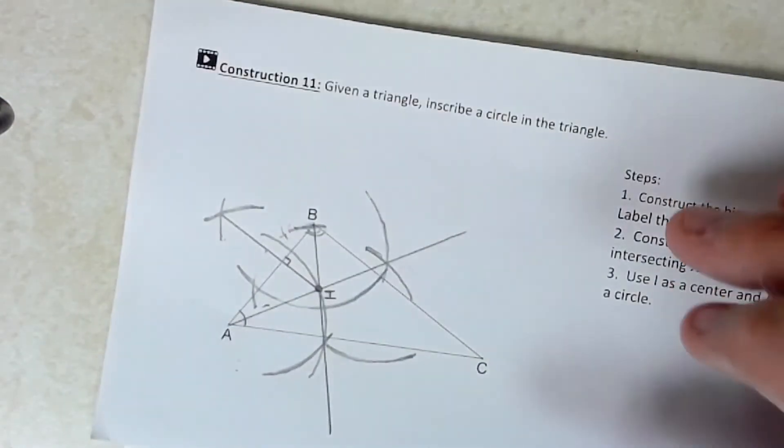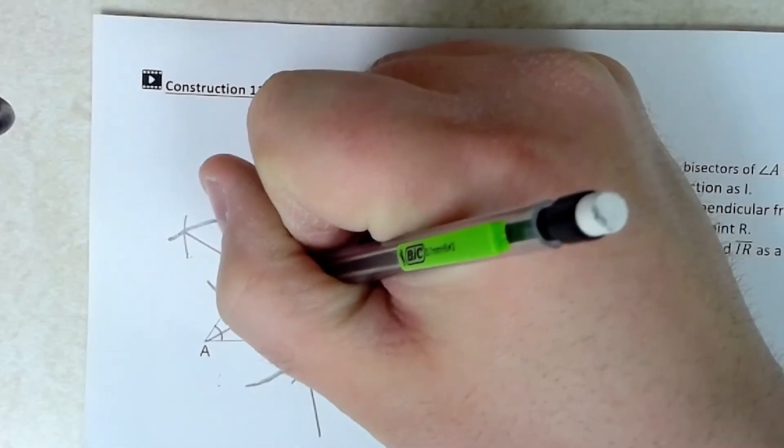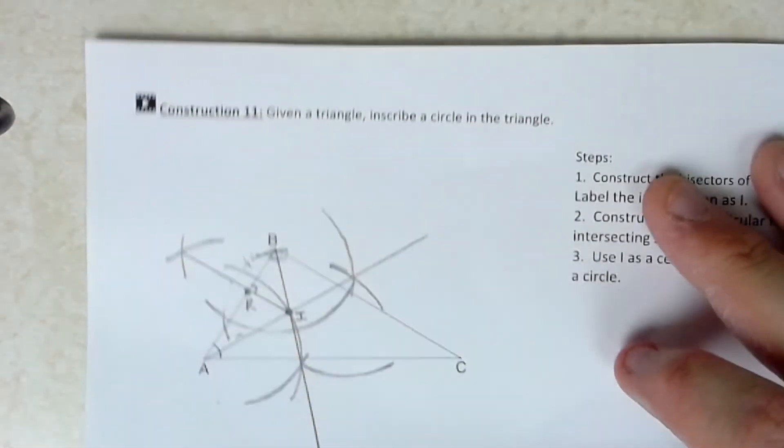So you can see here I've got my perpendicular line from I intersecting with side AB, and where it intersects with side AB, I'm just going to call that R.